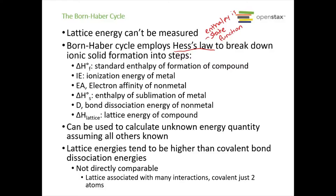If we know our lattice energy but don't know our bond dissociation energy, we can calculate the bond dissociation energy when we know everything else — because we combine everything to get delta H lattice. Also, lattice energies tend to be higher than covalent bond energies, but we really can't directly compare them, because the lattice involves many ion-ion interactions, whereas covalent bond dissociation energy is about just two atoms breaking apart.